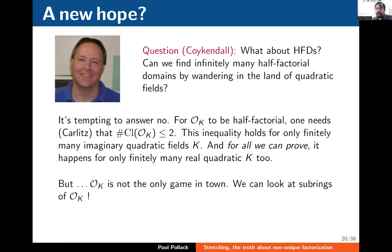So if you really wanted to get infinitely many UFDs from rings coming from quadratic fields, you'd be out of luck: no hope for imaginary quadratic fields, and even though you should have infinitely many UFDs from real quadratic fields, no one knows how to prove it. So what can you do? The reason I'm giving this talk is that I stumbled across a paper by a commutative algebraist, Jim Koykendall at Clemson University, who asked: instead of thinking about UFDs, let me think about HFDs — can I find infinitely many half-factorial domains by wandering in the land of quadratic fields?